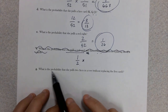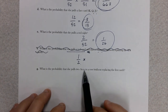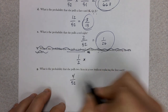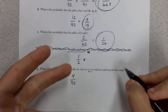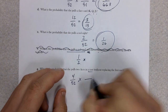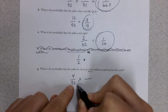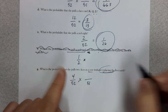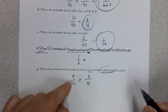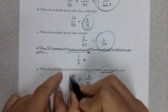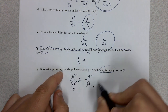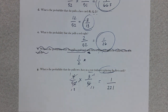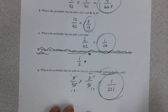Letter G: what's the probability she pulls two aces in a row without replacing? There are 4 aces out of 52 for the first draw. Then multiply — for the second draw there are only 51 cards and only 3 aces remaining. We can cancel some things and end up with 1 out of 221 — a very, very small chance.